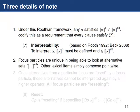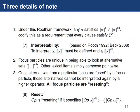Second, focus particles are unique in the lexicon in actually being able to look at the alternatives in their scope and quantify over them. Other lexical items compose point-wise — they compose with each individual alternative systematically. Third, once alternatives from a particular focus are used by a focus particle, that same set of alternatives can't be used for the quantification of a higher particle. I'll call this the resetting property: an operator is resetting if it lexically specifies that the alternative set after it applies is a singleton set of the ordinary semantic value it generates.